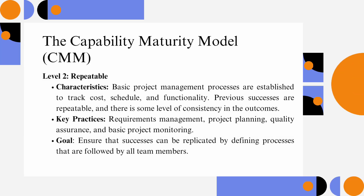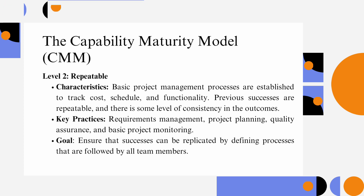Level 2 – Repeatable: Basic project management processes are established to track cost, schedule, and functionality. Previous successes are repeatable, and there is some level of consistency in the outcomes. Key practices include requirements management, project planning, quality assurance, and basic project monitoring. The goal is to ensure that successes can be replicated by defining processes that are followed by all team members.